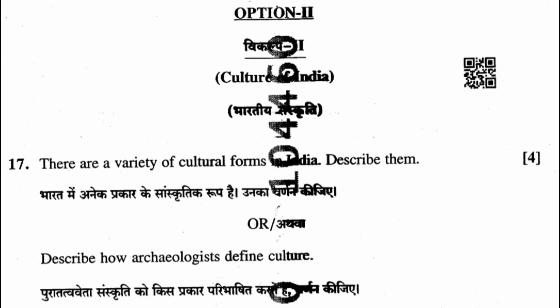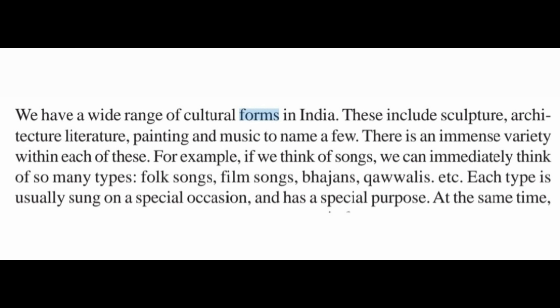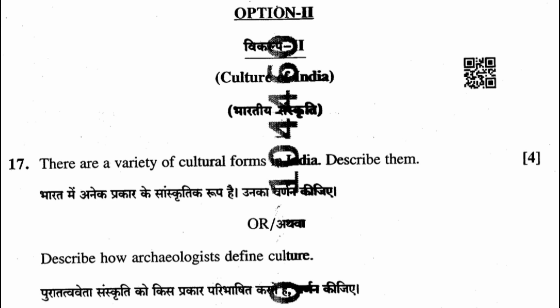Option 2, Question 17: There are a variety of cultural forms in India. Describe them. We have a wide range of cultural forms in India, including sculpture, architecture, literature, painting, and music, to name a few. There is an immense variety within each of these. For example, if we think of song, we can immediately think of many types: folk songs, film songs, bhajan, qawwali, etc. Each type is usually sung on a special occasion and has a special purpose.